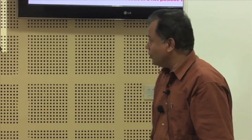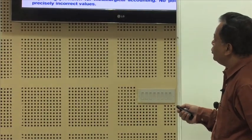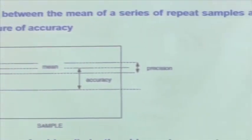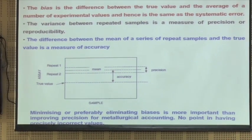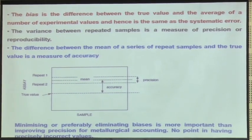So if I want to know the true value I have to inspect and understand, or maybe use some kind of equipment and measurement devices. The bias is the difference between the true value and the average of a number of experimental values — hence it is the same as the systematic error.